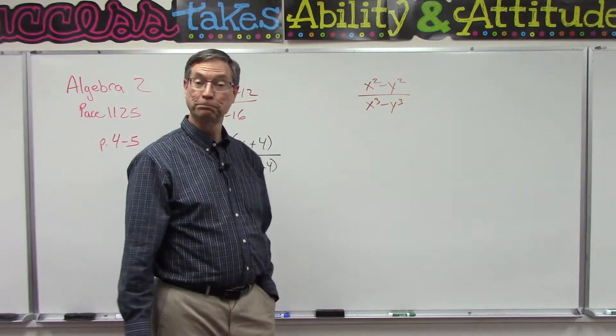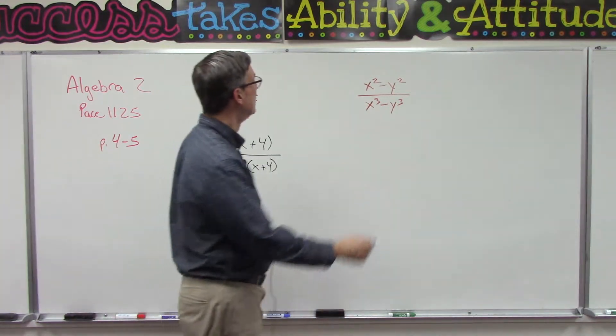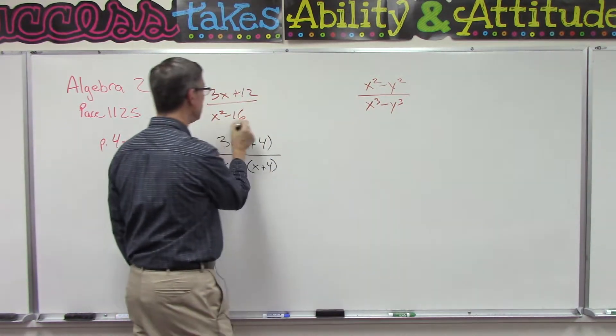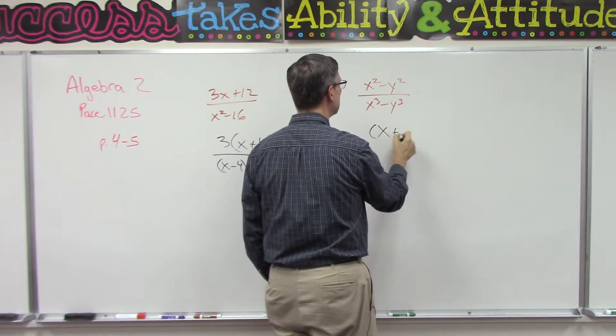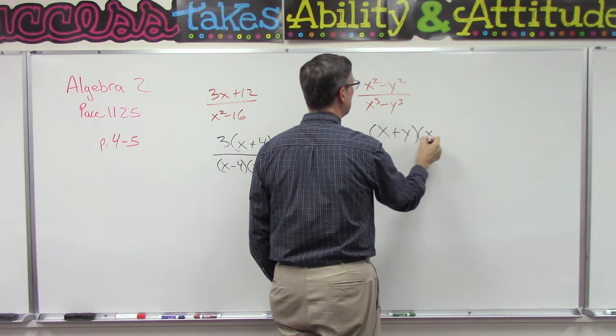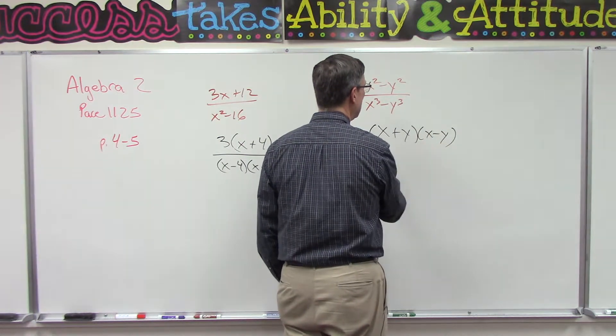What are the rules that we need to follow? We need to factor. So this top one is just like this one we did here. That's easy: (x + y)(x - y).